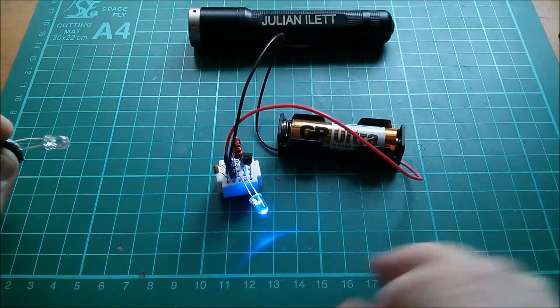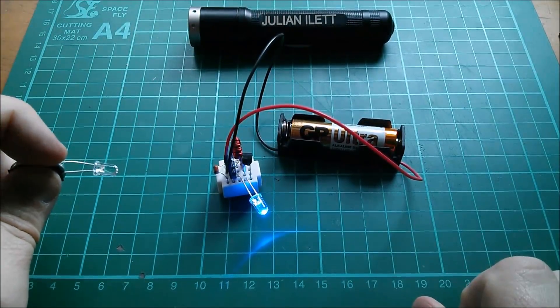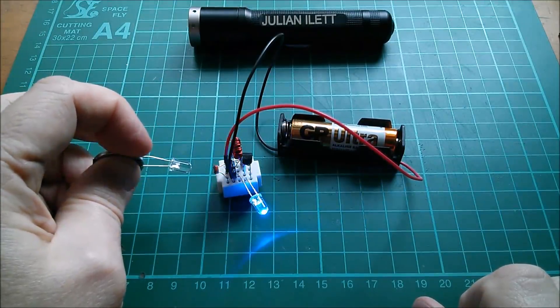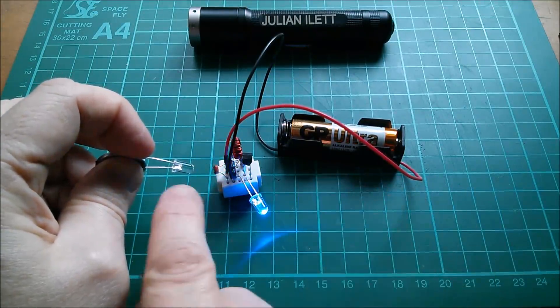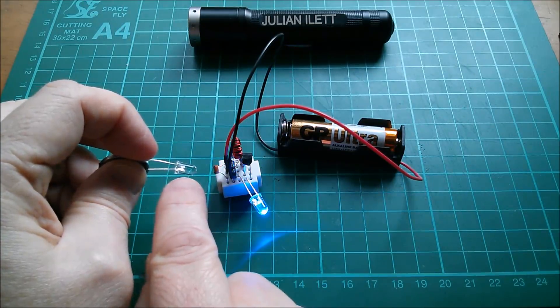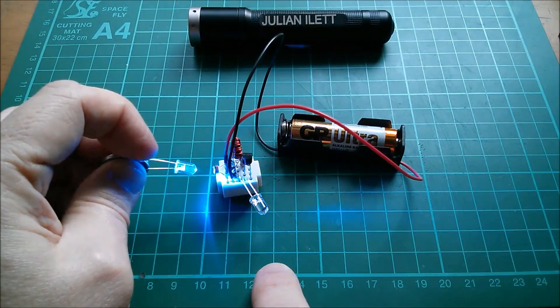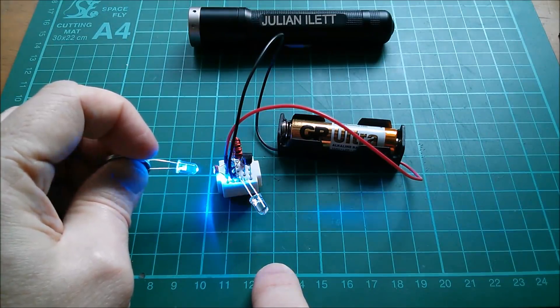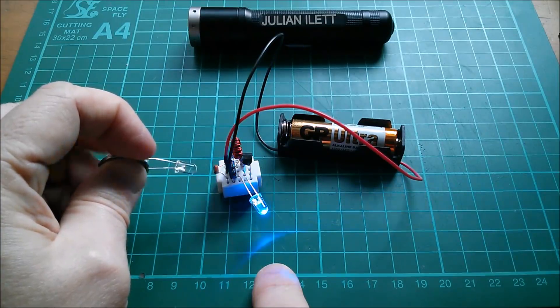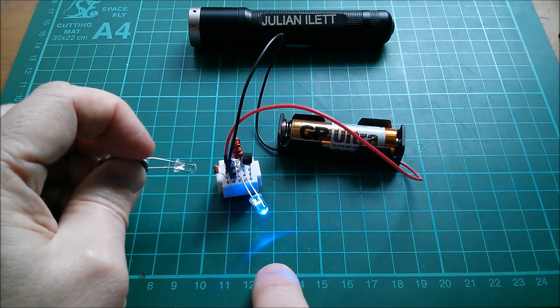So what else can we use this enhanced joule thief for? Well how about this? If I shine this blue LED at my joule thief, whenever this LED is on, this one's not, and whenever this one's off, this one's on. So it's a NOT gate, it's an inverter. So could we use this as a logic element? Well maybe.